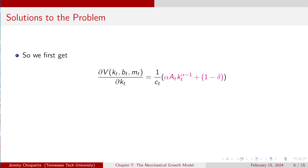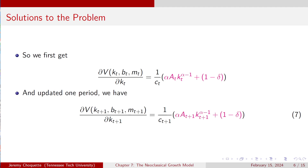First, we get the envelope condition for capital — we've seen this in two previous examples: the neoclassical growth model and the previous lecture video. That's the same, and it makes sense because the constraint is linear and additively separable, so at the margin, regardless of what else is in the constraint, your decision for capital is the same. Updated one period, we've seen this before — that works.